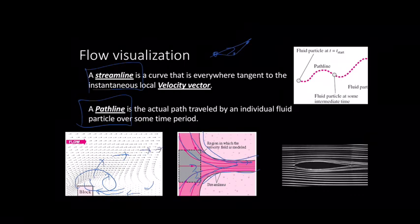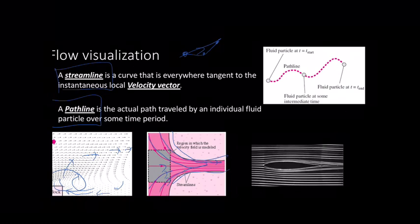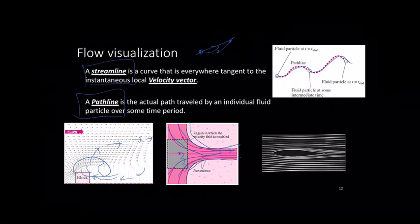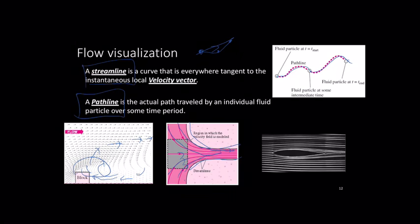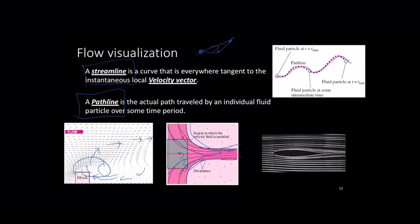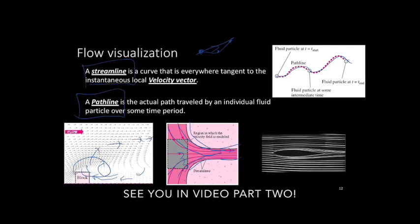A path line is the actual path traveled by an individual fluid particle over some time period. You keep track of exactly where the particle goes — from point one to point two to point three. Streamlines and path lines are the last topics I want to share in this video. I hope you enjoyed it and I'll see you in the video for Part Two. Thank you.